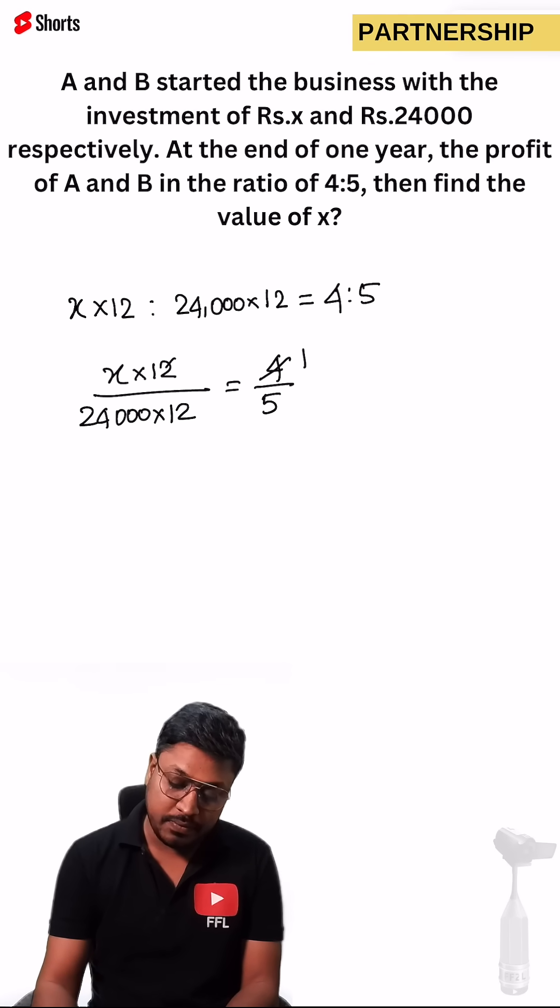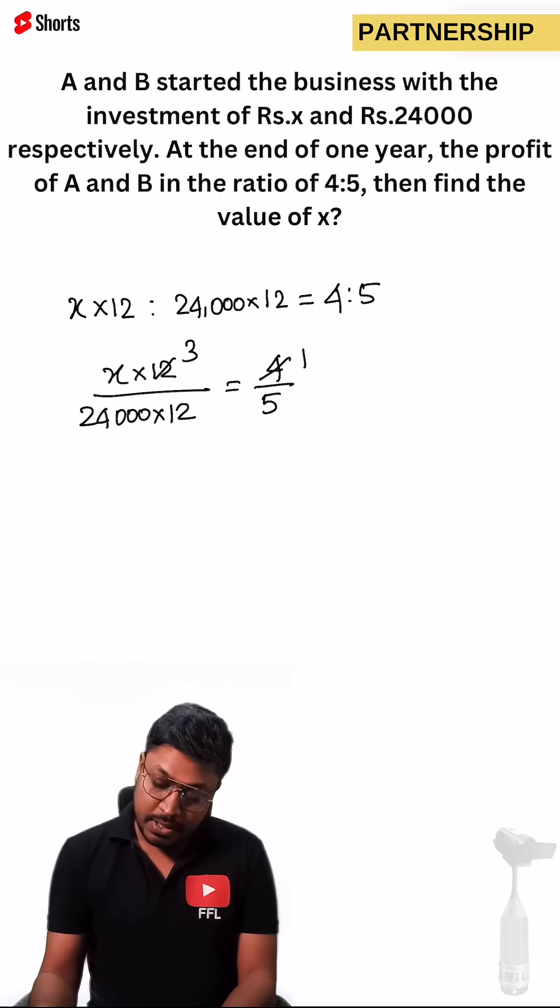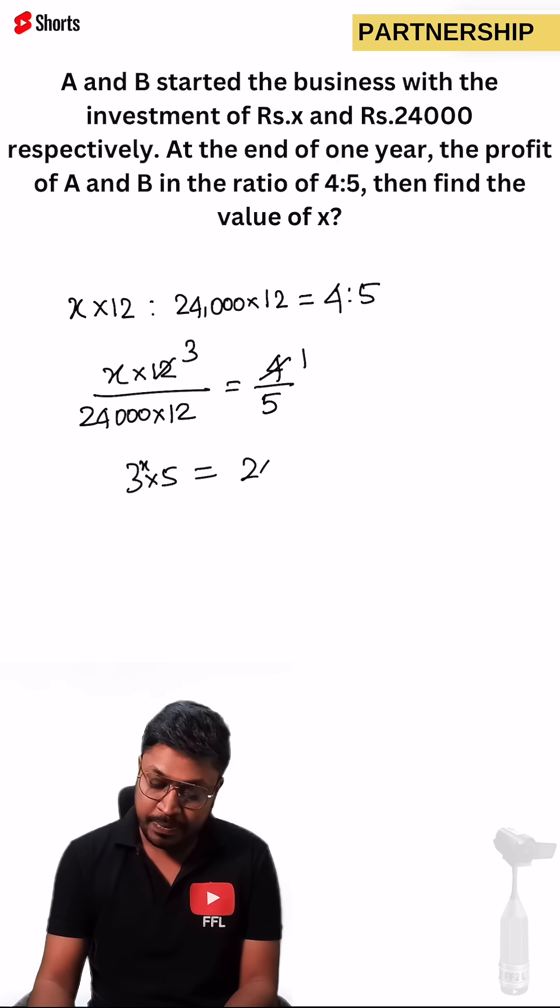4s are 4, 3s are 12. Now I think whether we can cancel anything. 3 into 5 this will be 3x. So 3x into 5 is equals to 24,000 into 12.